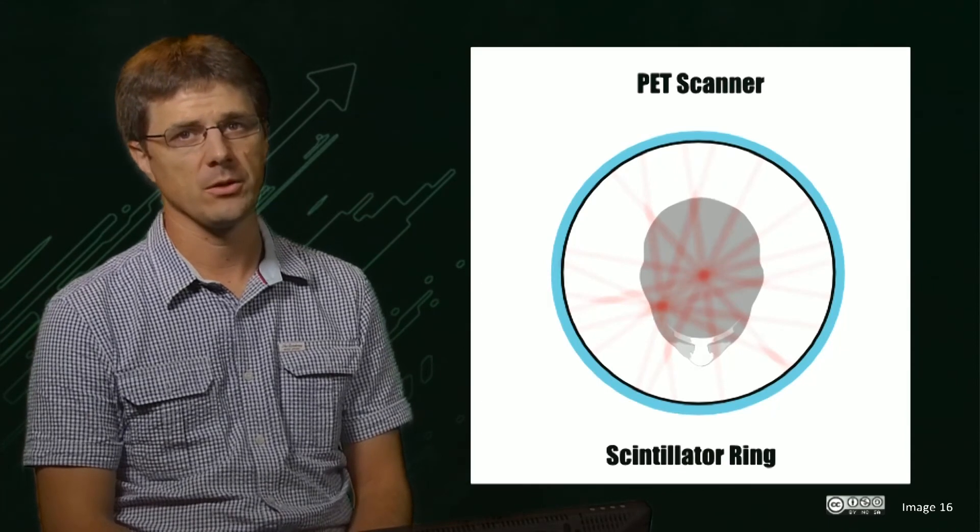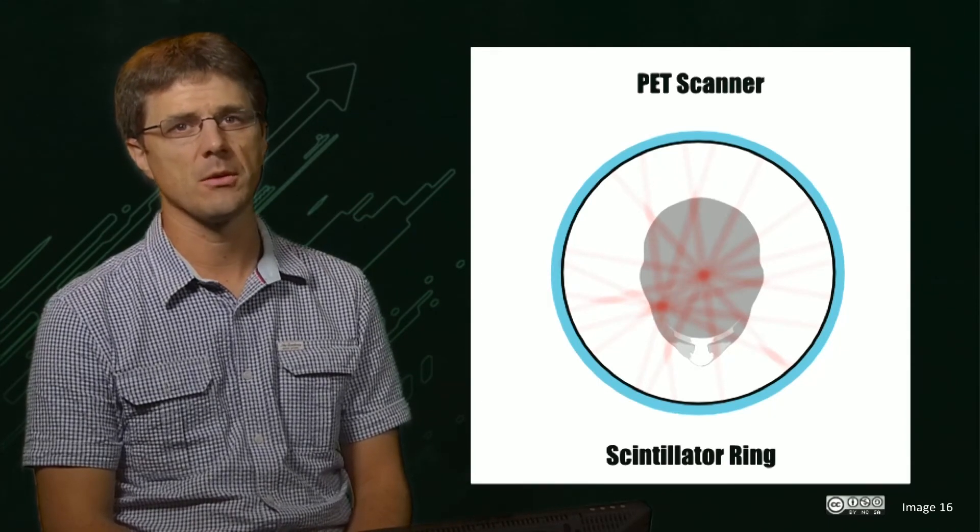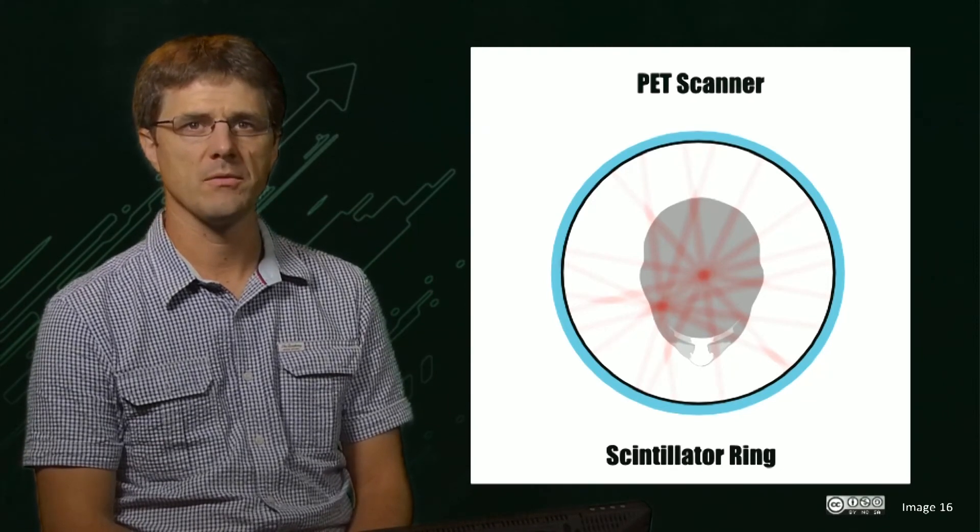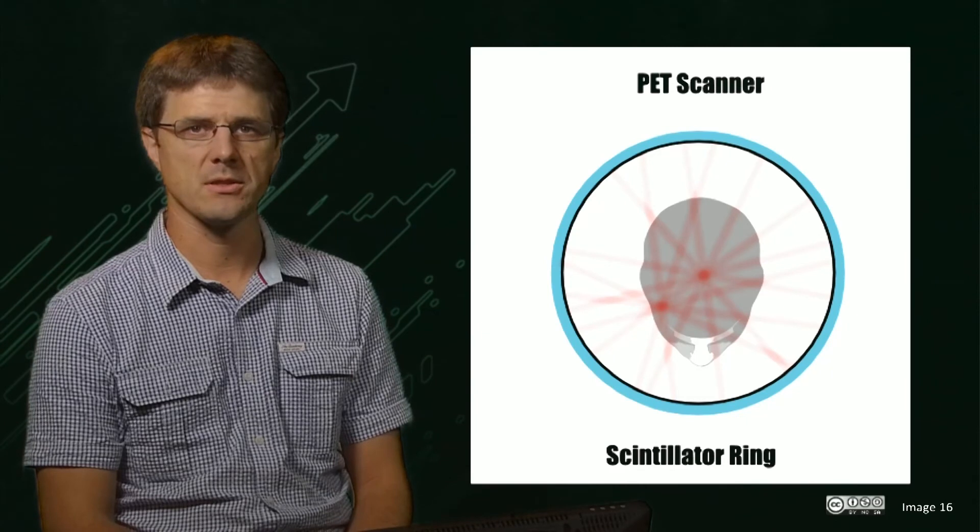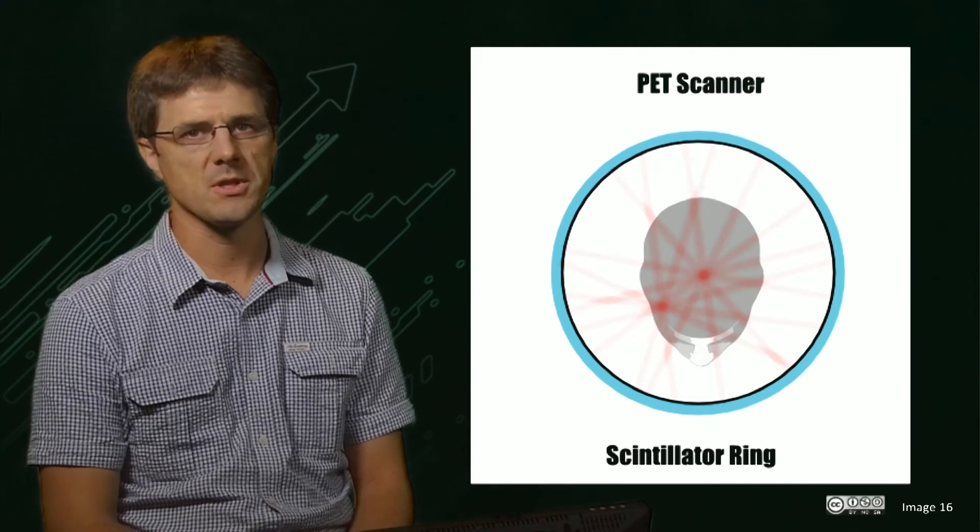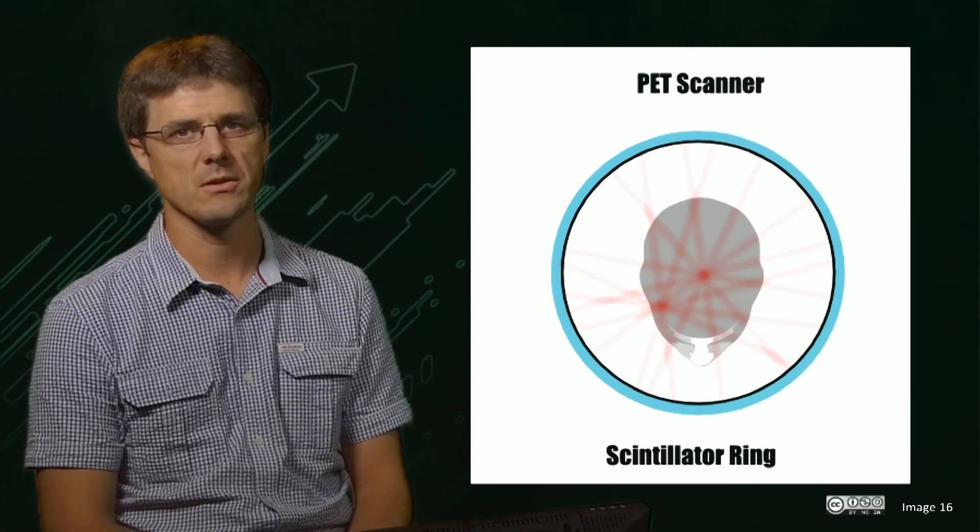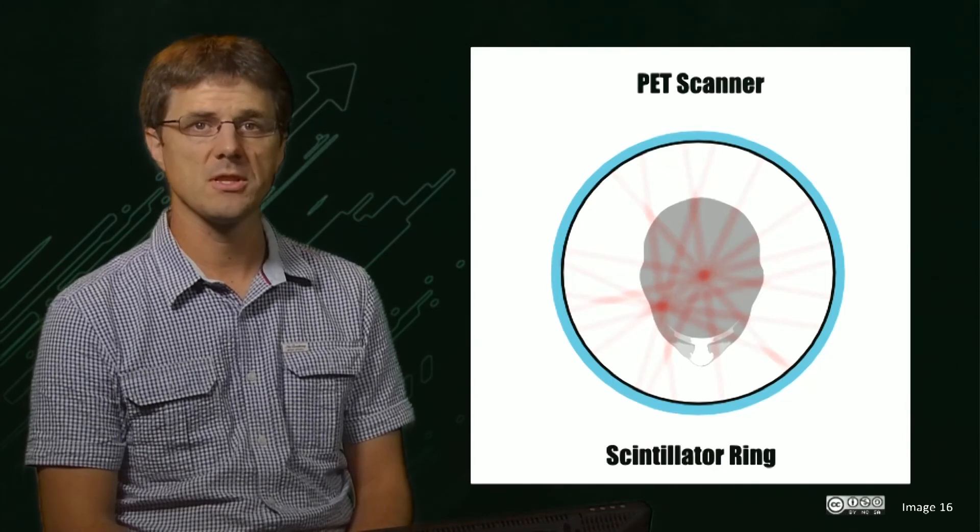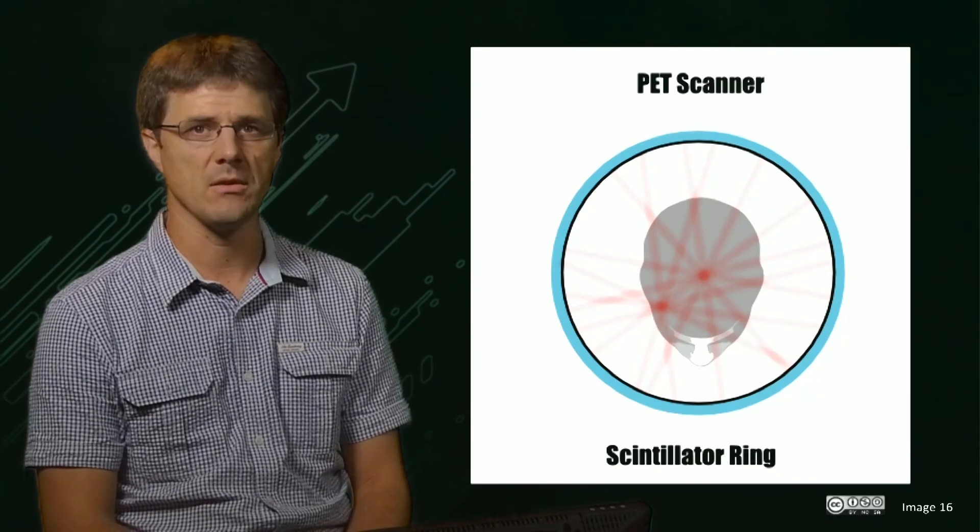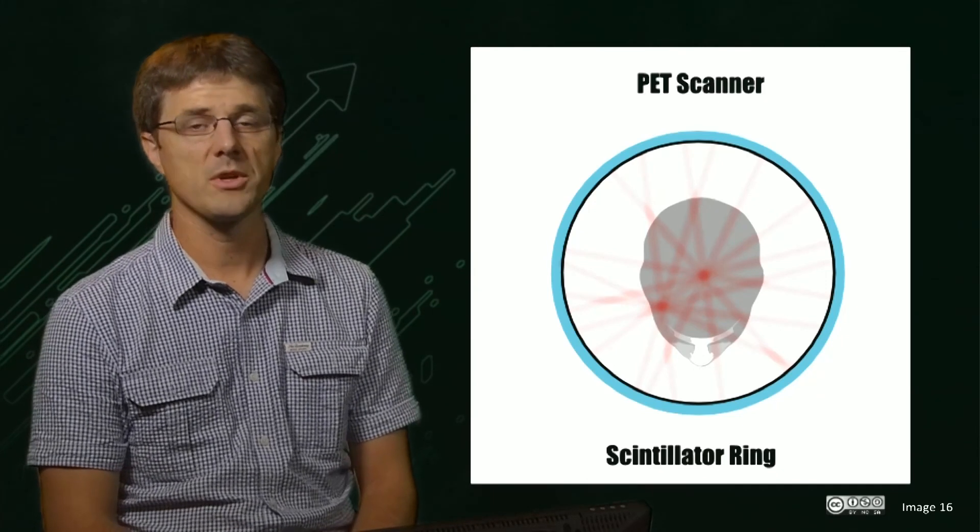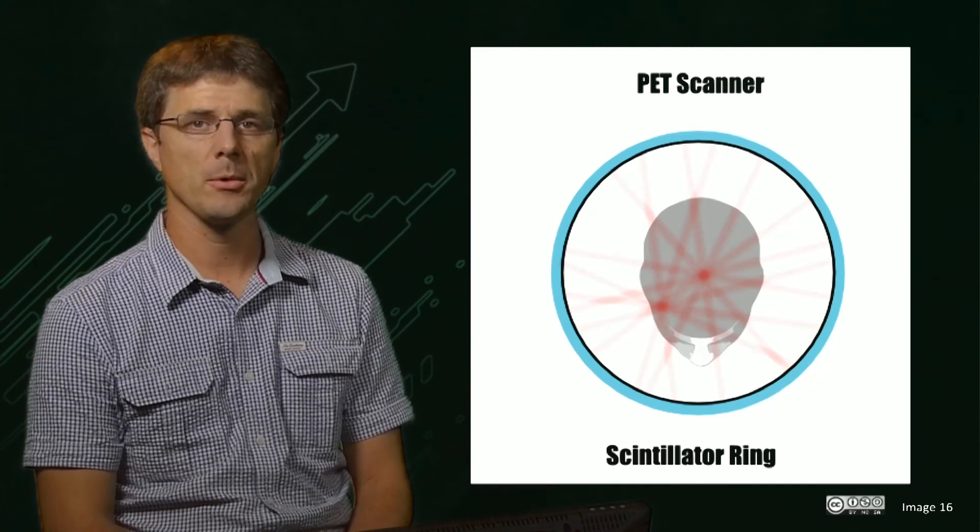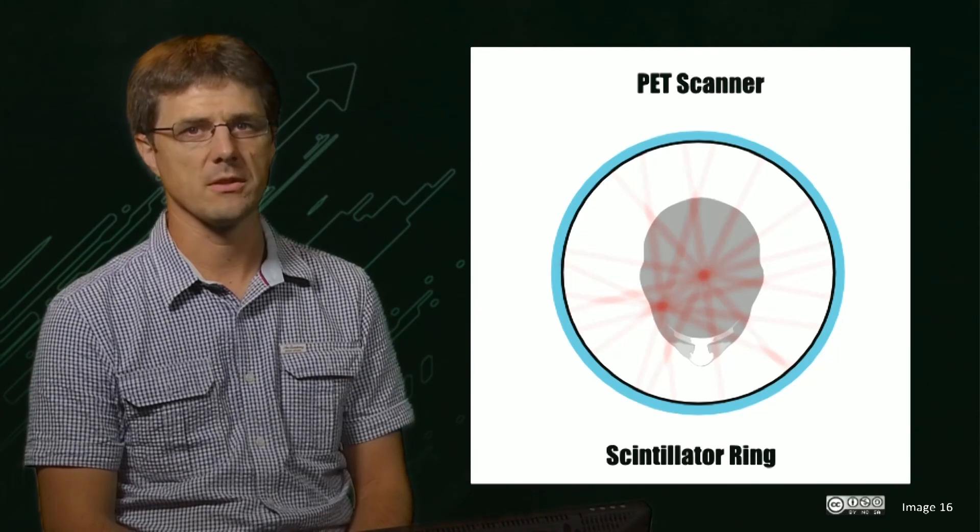We haven't displayed the exact technical details of how this occurs as there are many differing techniques. The most typically used technique involves first sorting the LORs into similar directions, grouping them into what are called sinograms and then reconstructing them as per CT back projection. Other techniques use statistical techniques such as expectation maximization to generate an inverse solution. What is similar between all these techniques is that the end result is a probabilistic map of the source of coincidence events.